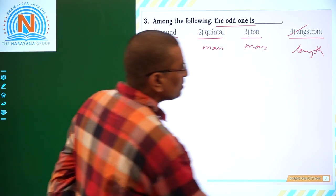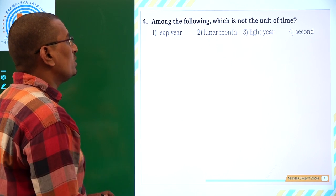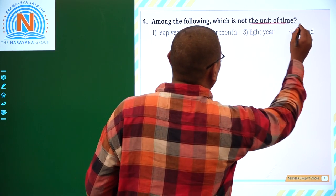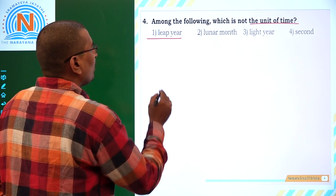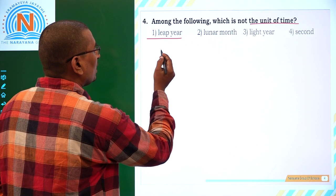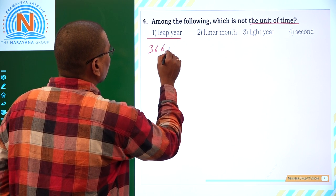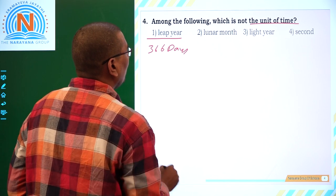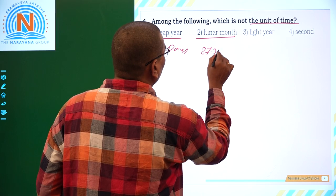Next one: Among the following, which is not the unit of time? A leap year has duration of 366 days. Lunar month is 27.3 days.